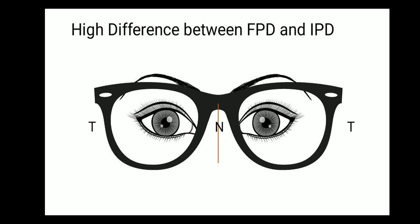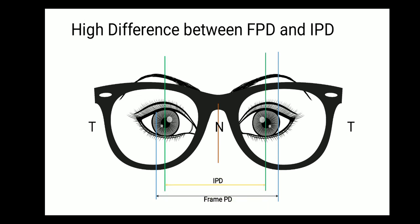Here you can see the eyes are slightly closer in — the right eye is slightly outside and the left eye is slightly inside. Adding a plotter to understand the positions: the blue line is exactly half of the frame representing frame PD, and the green line is the IPD. On the right side the difference between the green and blue lines is smaller, but on the left side the difference is wider, indicating the left eye PD is lesser than the right eye PD.